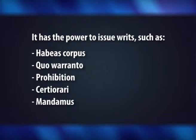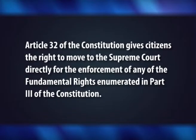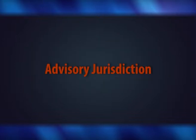The Supreme Court is the guardian of fundamental rights and thus has non-exclusive original jurisdiction as the protector of fundamental rights. It has the power to issue writs such as habeas corpus, quo warranto, prohibition, certiorari and mandamus. In addition to issuing these writs, the Supreme Court is empowered to issue appropriate directions and orders to the executive also. Article 32 of the Constitution gives citizens the right to move to the Supreme Court directly for the enforcement of any of the fundamental rights enumerated in Part 3 of the Constitution. The second category is the advisory jurisdiction.